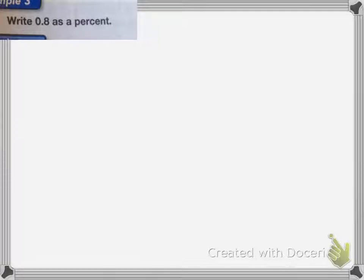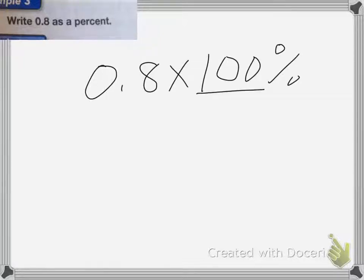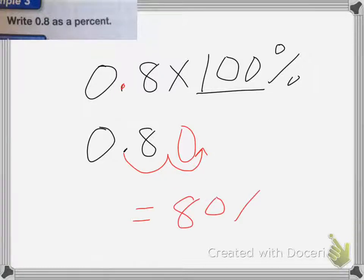Write 0.8 as a percent. Again, I multiply 0.8 times 100%. And we learned when we multiply by 100, we move the decimal place to the right two times. So I have 0.8, I move the decimal place to the right two times: 1, 2. Put my zero in. So my answer is 80%.